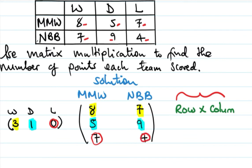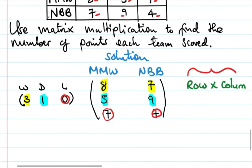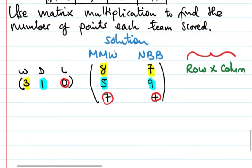For Mighty Moku Wanderers (MMW), the points are calculated as: 3 times 8, plus 1 times 5, plus 0 times 7.